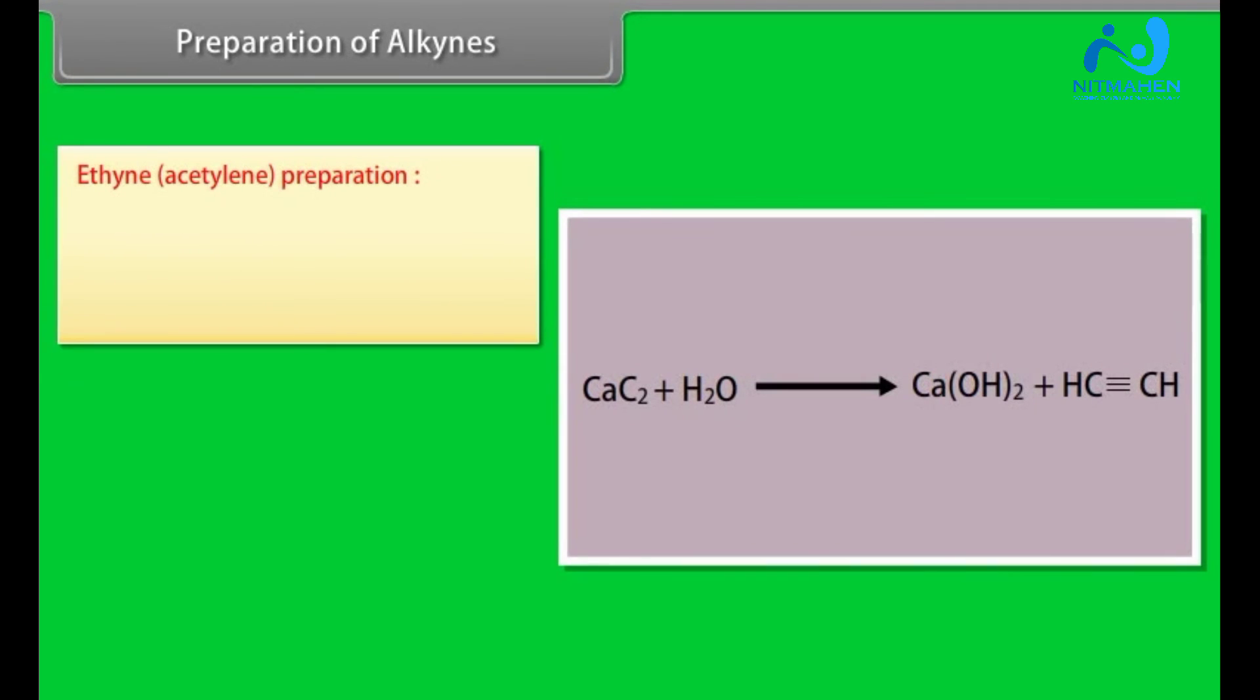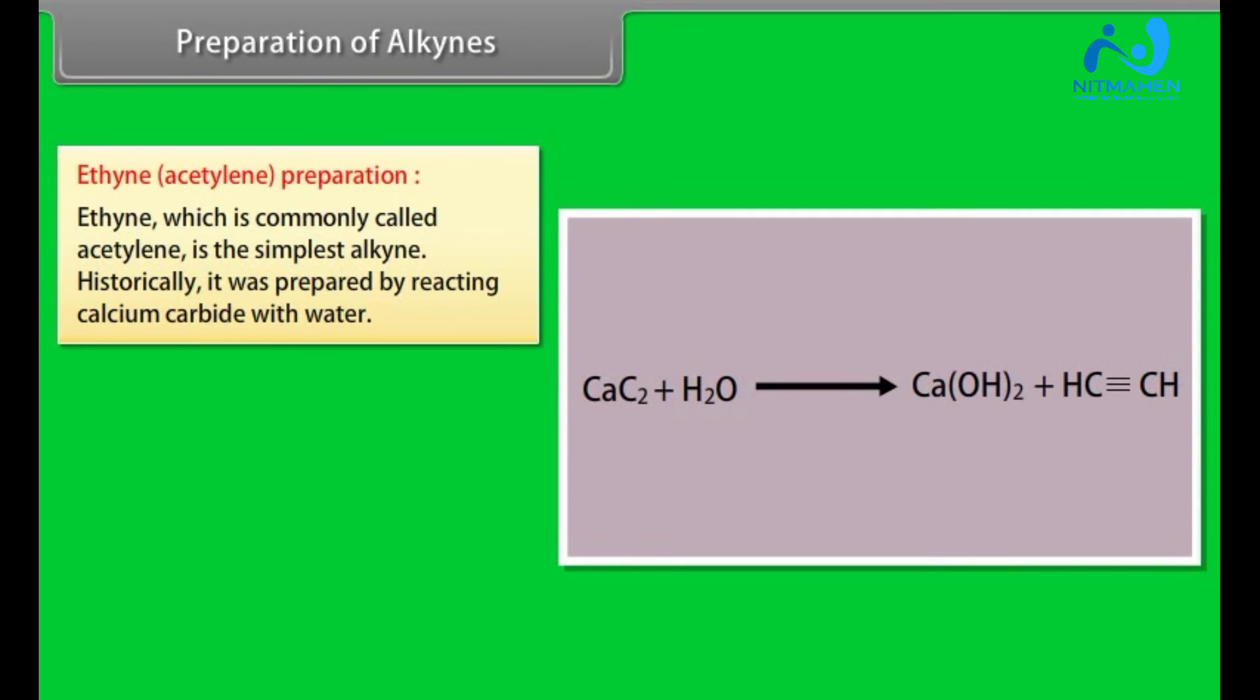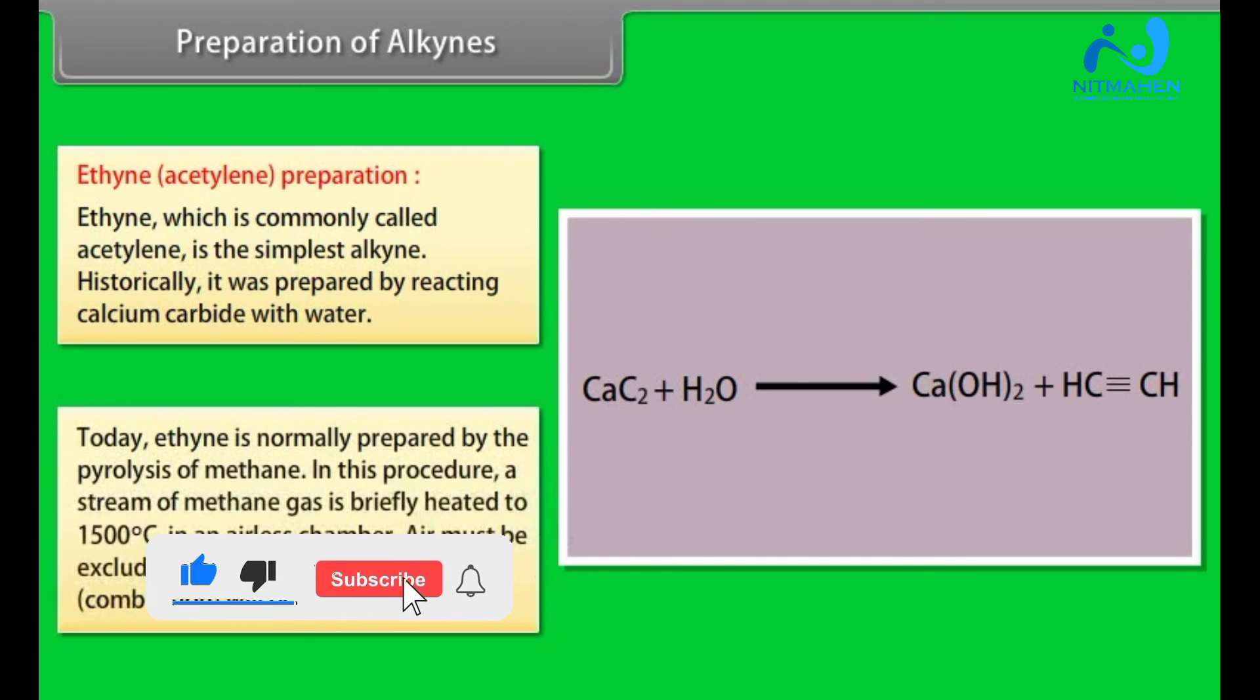Ethyne-acetylene preparation: Ethyne, which is commonly called acetylene, is the simplest alkyne. Historically, it was prepared by reacting calcium carbide with water. Today, ethyne is normally prepared by the pyrolysis of methane. In this procedure, a stream of methane gas is briefly heated to 1500 degrees centigrade in an airless chamber. Air must be excluded from the reaction or oxidation combustion will occur.